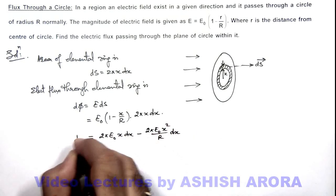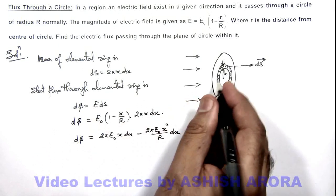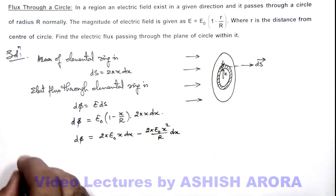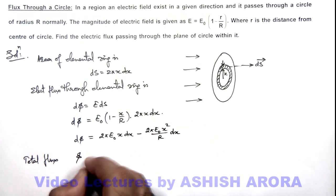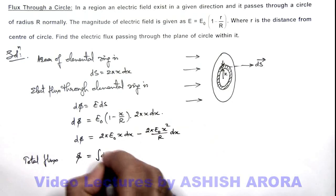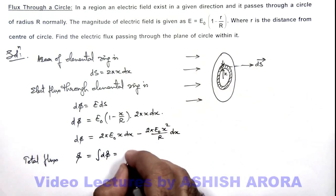So if this is the flux dφ, the elemental flux passing through the elemental ring, total flux we can calculate by integrating this.